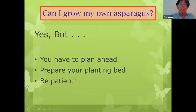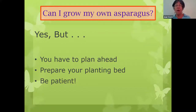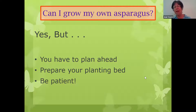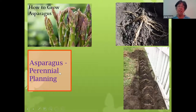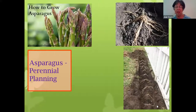What about asparagus? Organic asparagus can run four dollars a pound at the grocery store. Can I grow my own? Yes, but you have to plan ahead, prepare your planting bed, and be patient, because asparagus is perennial — it comes back year after year. You don't have to replant it. They say a healthy asparagus bed will last a generation.